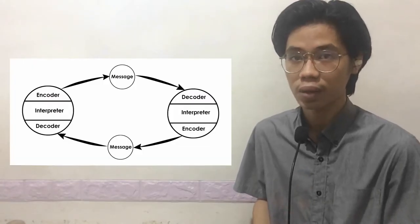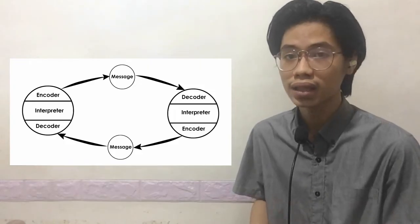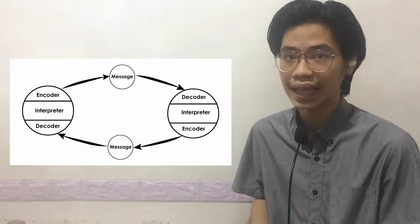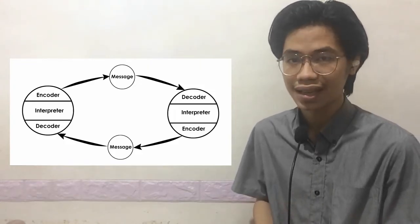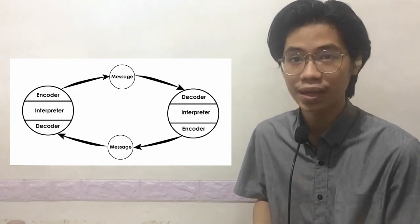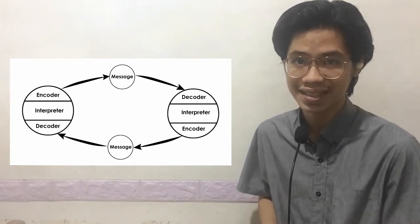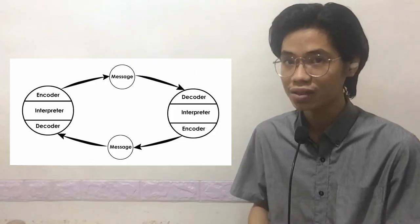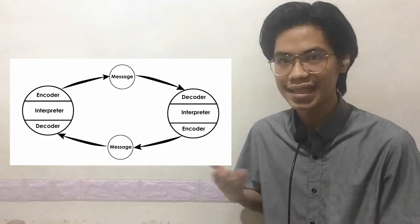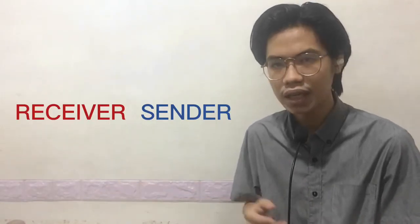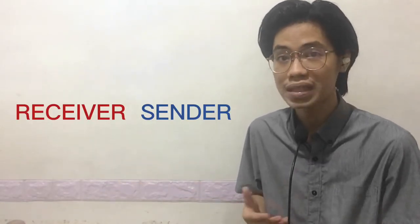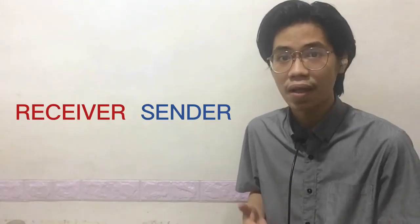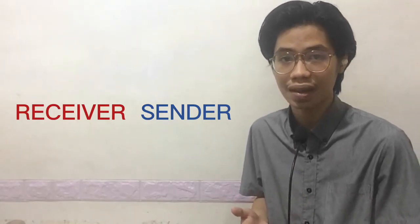Osgood and Schramm's model of communication is a widely known interactive model, highlighting that communication is reciprocal and equal, as communication is a two-way street. The model consists of two interpreters who alternate positions as the sender and the receiver. Each of the interpreters can both receive and send messages, hence there is a constant exchange of messages between them.